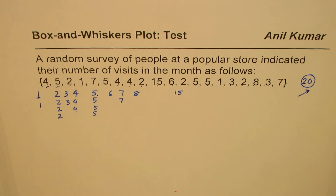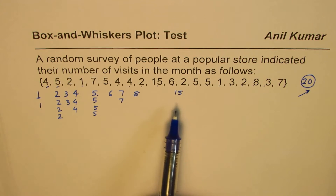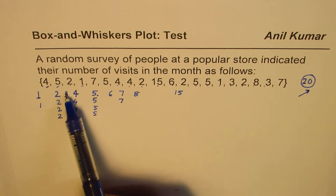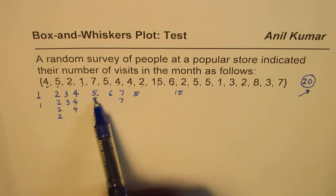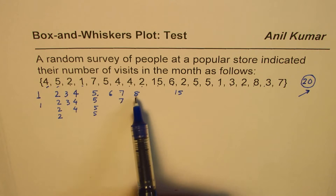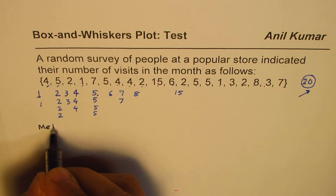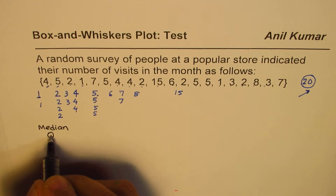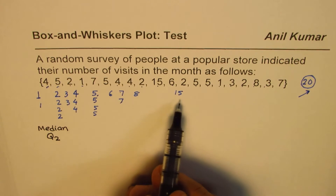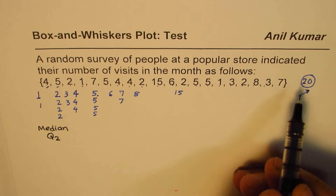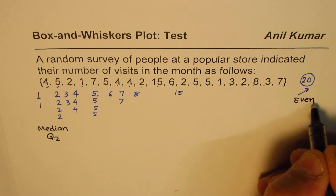Once you've placed all the numbers, count them again as a tally: 1 through 20 — all 20 numbers are accounted for. Now let's begin by finding the median, also called the second quartile, Q2. Since we have 20 numbers — an even count — there will be two middle values.